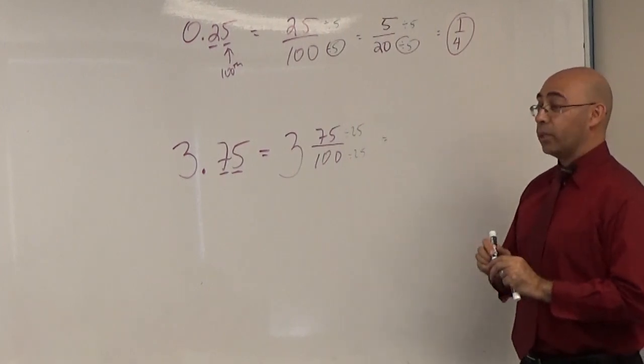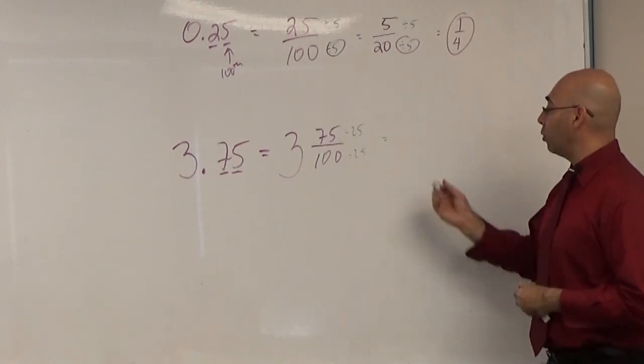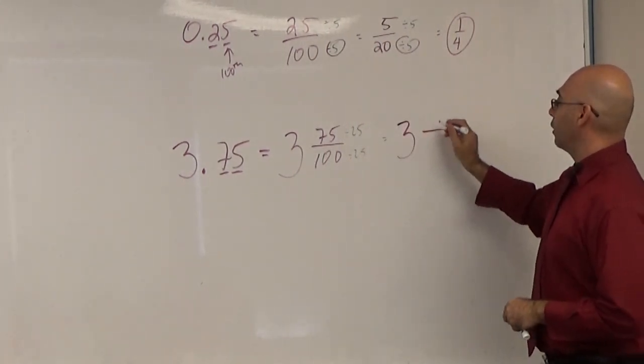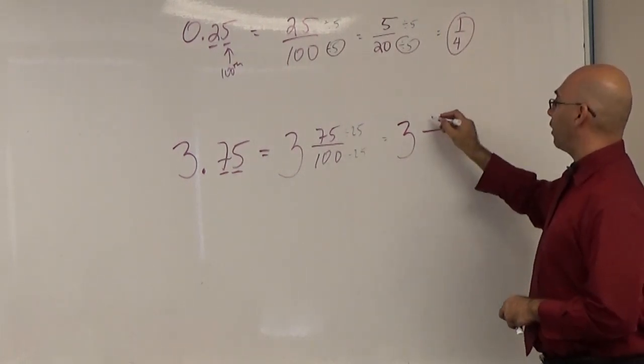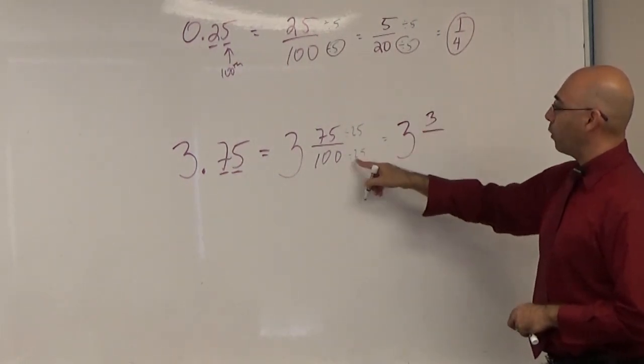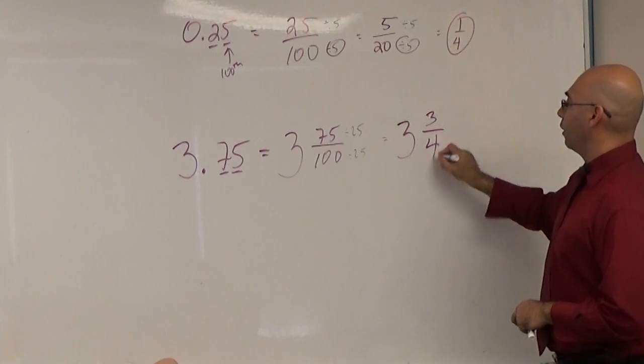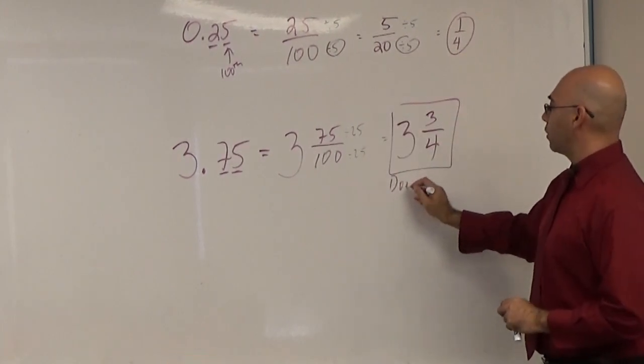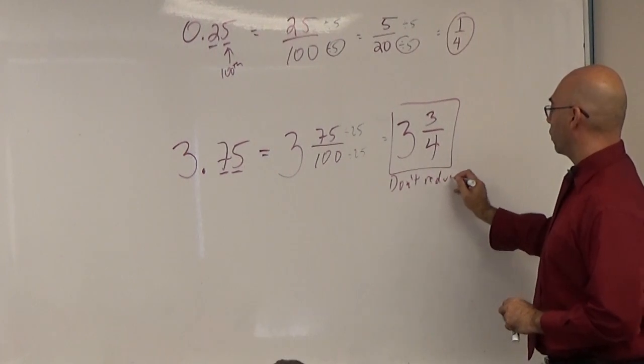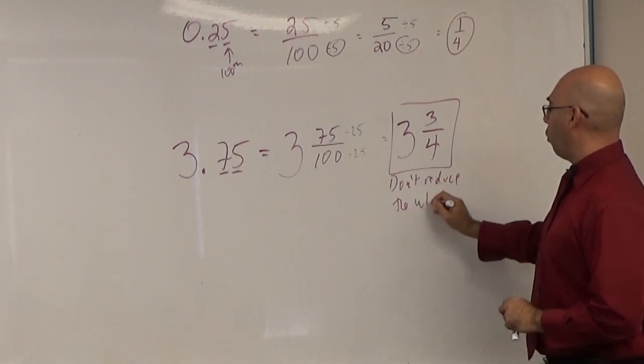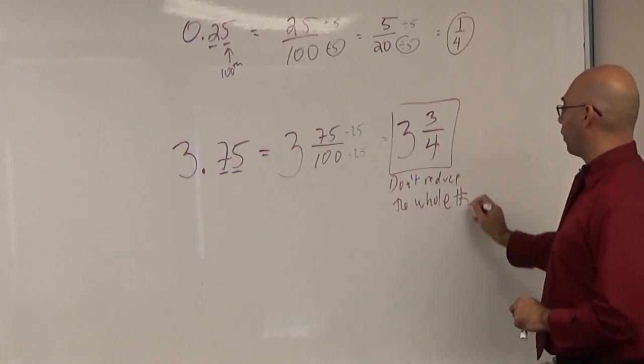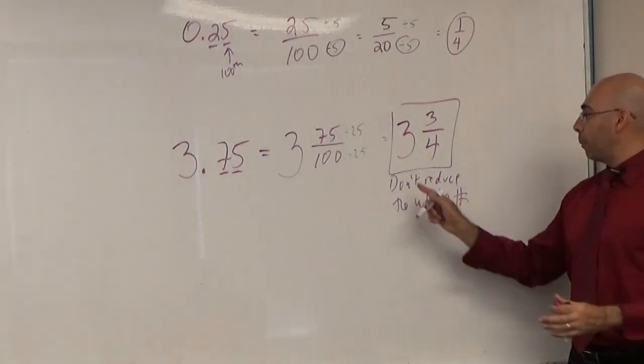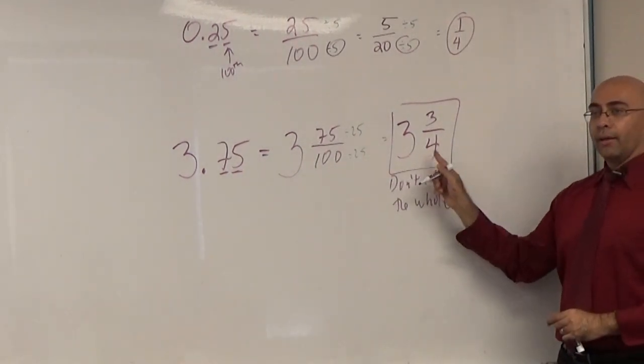When you see numbers like 75, 50, 25, 100, think quarters. I can divide both by 25. The whole number stays - 75 divided by 25 is 3. How many quarters make up a dollar? Your final answer: 3 and 3/4. Don't reduce the whole number, reduce only the fraction.